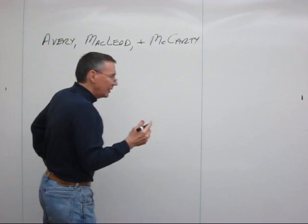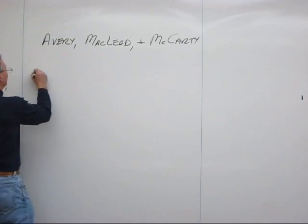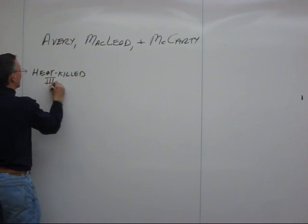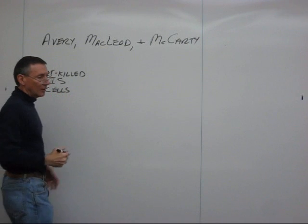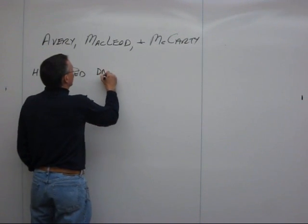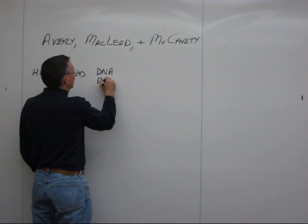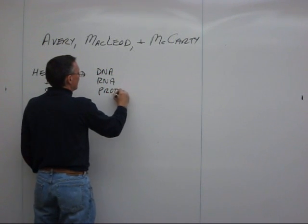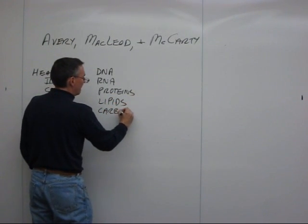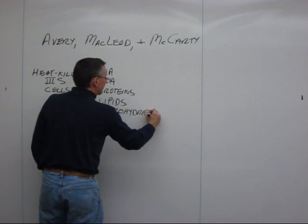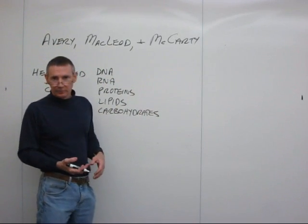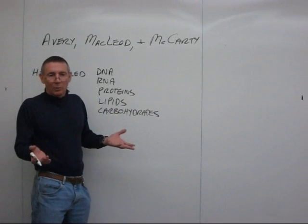What they did was start out with the heat-killed 3S cells. If you think about these cells, they're bacterial cells, and they're going to contain the typical things you find in organisms. As far as macromolecules, you've got DNA, RNA, proteins, lipids, carbohydrates, and of course some water and small molecules. If you're going to have something that's going to carry the information, it's got to be one of these. So they looked at this and thought: what are the possibilities? What's the likely one?